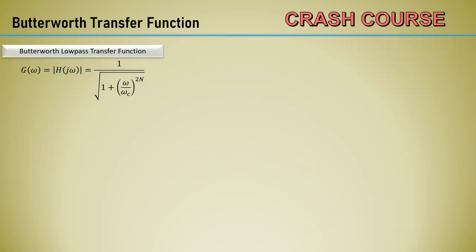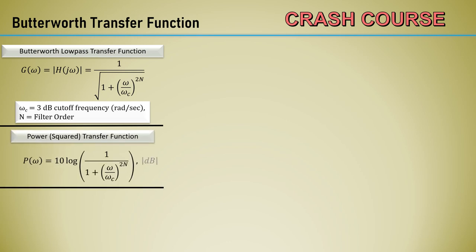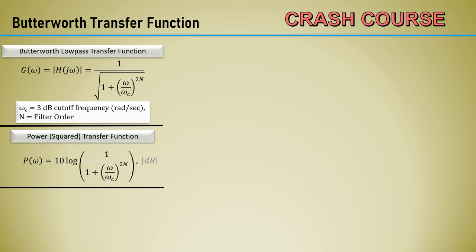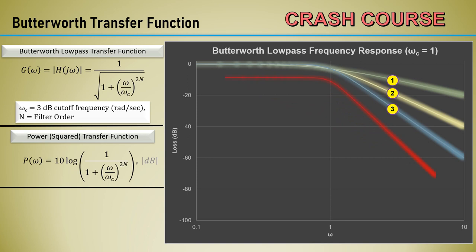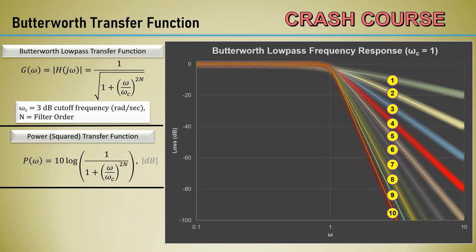Here is the general transfer function for the maximally flat Butterworth low-pass filter as a function of angular frequency omega. Omega sub c is the cutoff frequency in radians per second, and n is the filter order number. We convert voltage-type functions into power by squaring the value of the function, which eliminates the radical. Here it's represented in decibels. Here is a plot of the low-pass filter power response in decibels normalized to an omega c of 1. I have plotted filter orders 1 through 10.